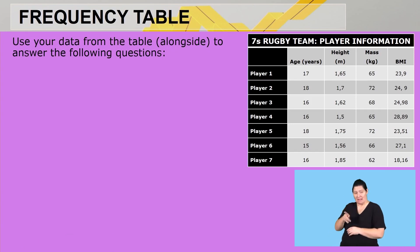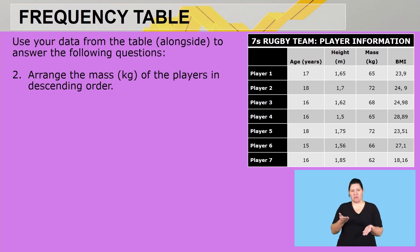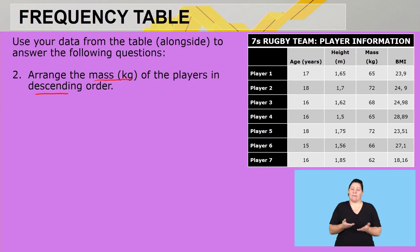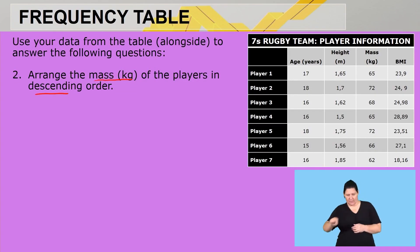Question two says arrange the mass of the players in descending order. It's important to know your terminology — descending means from big to small. So I'll go to the mass column and find the largest value first.